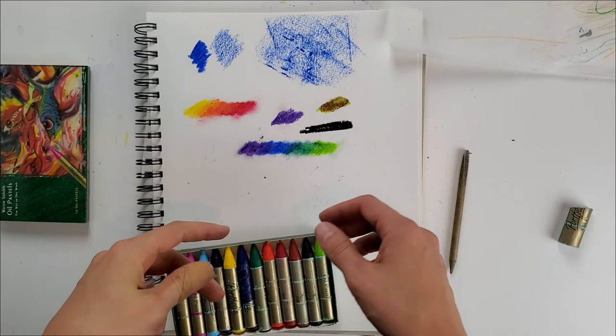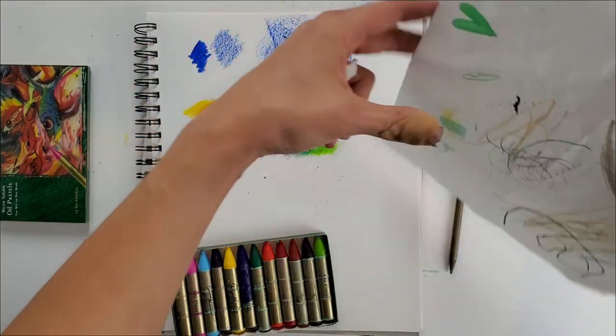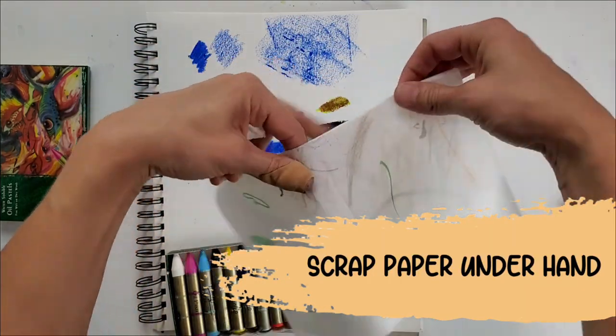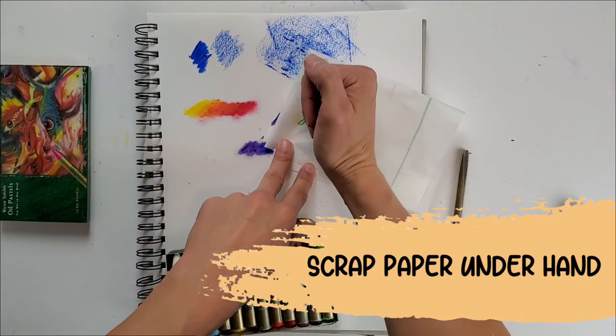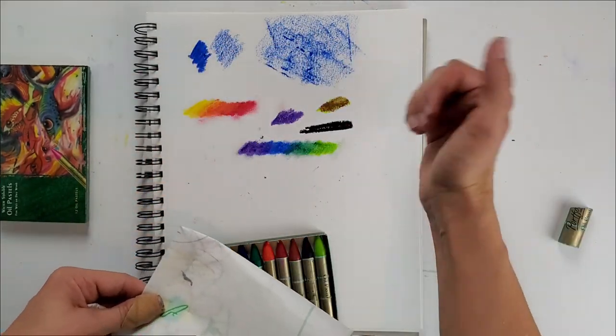If you're starting to notice that maybe your artwork is smearing as you're working, you can use a piece of scrap paper under your hand to prevent smudging and smearing.